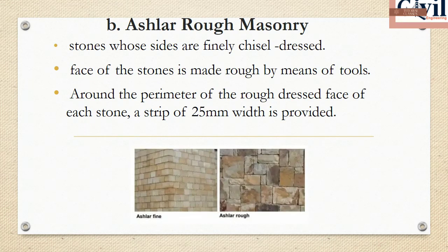Ashlar Rough Tooled masonry uses chisel dressing on the face of the stones, leaving the surface rough. After this, strips are used around the edges of the stone face.